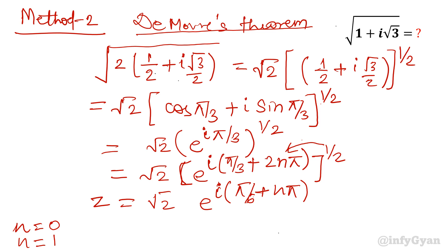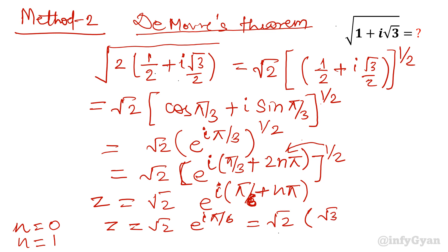For n equals 0: z equals root 2 times e raised to the power i pi over 6, which equals root 2 times cos pi over 6 plus i sin pi over 6. Cos pi over 6 is root 3 over 2 and sin pi over 6 is 1 over 2. Opening the bracket gives root 6 over 2 plus iota times root 2 over 2, matching the previous method.